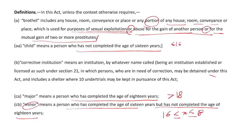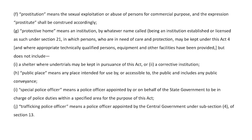'Corrective institution' means an institution by whatever name called, being an institution established or licensed under Section 21, in which persons who are in need of correction may be detained under this Act, and includes a shelter where under-trials may be kept under this Act. 'Prostitution' means sexual exploitation or abuse of a person for commercial purpose, and the expression 'prostitute' shall be construed accordingly.